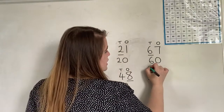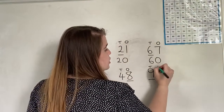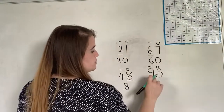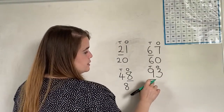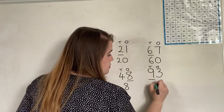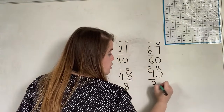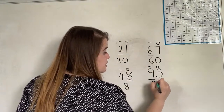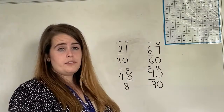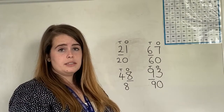And lastly, tens column, ones column. I've got 9 in my tens column, so I've got 9 tens which is 90. Well done if you've got those correct.